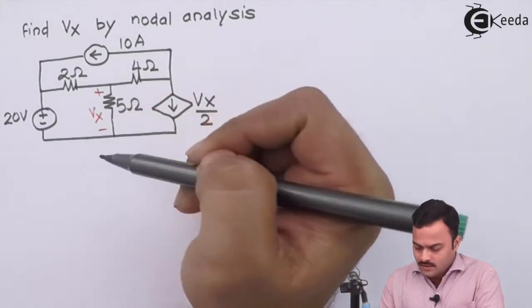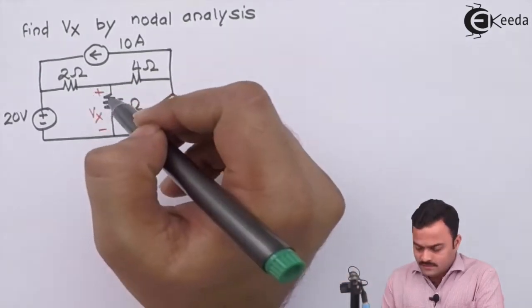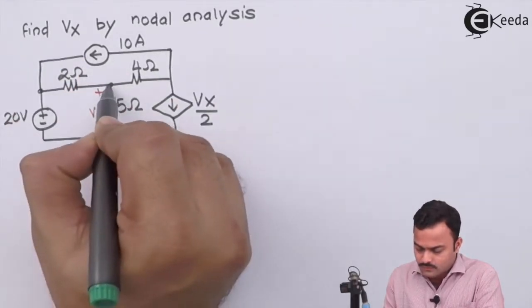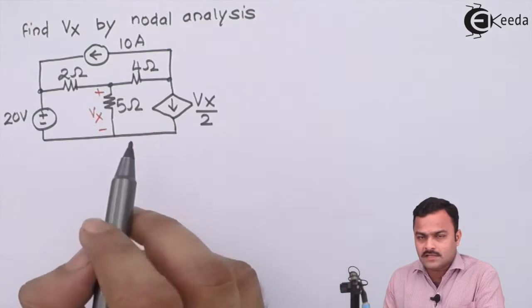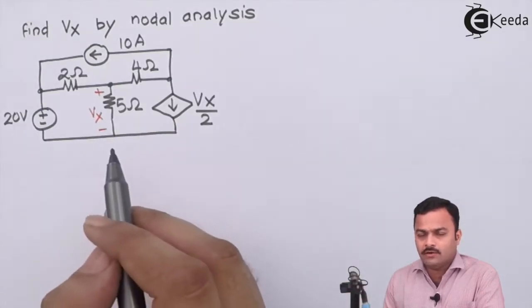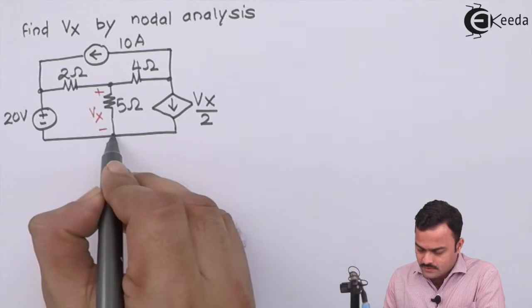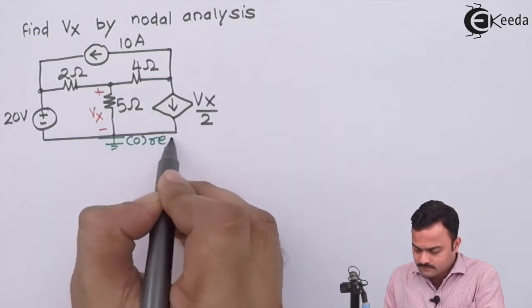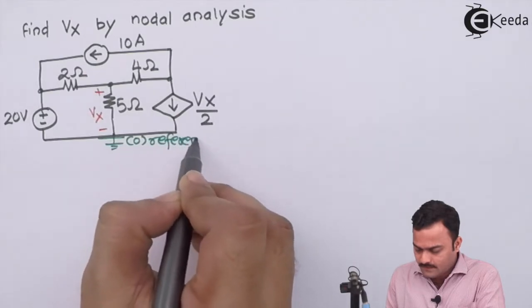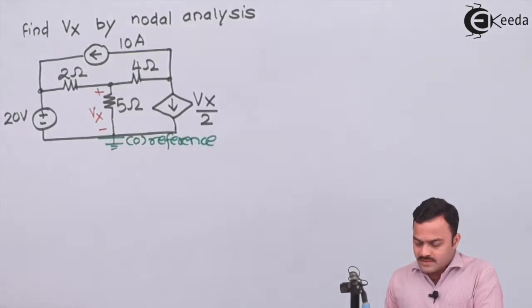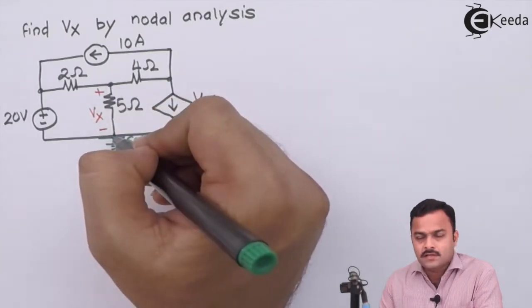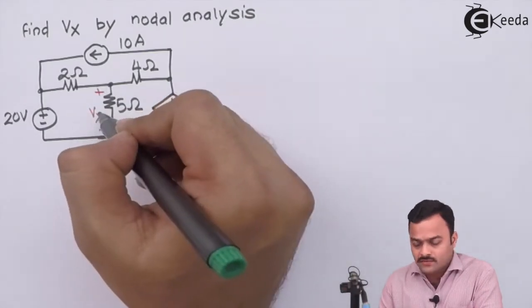If you see carefully, this particular circuit is having three nodes—one, two, three—with potentials V1, V2, V3, or maybe Vx, Vy, Vz, and a reference over here with potential zero.